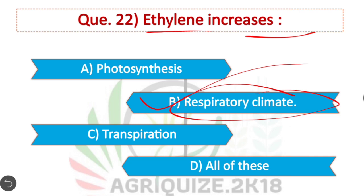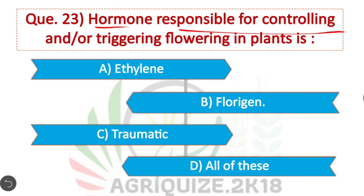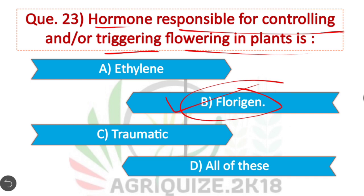Question 23: The hormone responsible for controlling or triggering flowering in plants — Florigen is the hormone responsible for controlling or triggering flowering in plants.